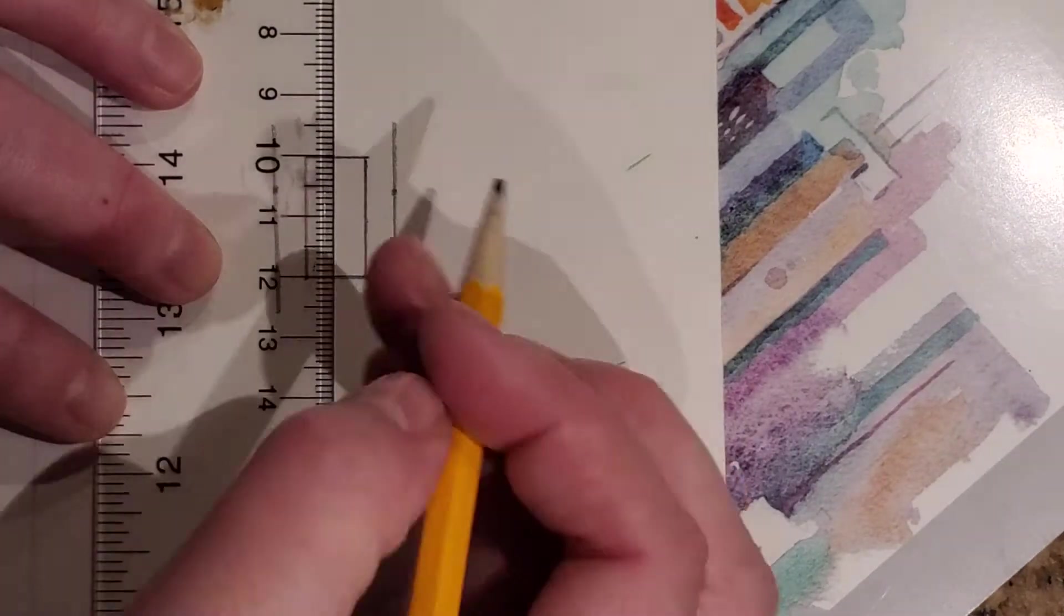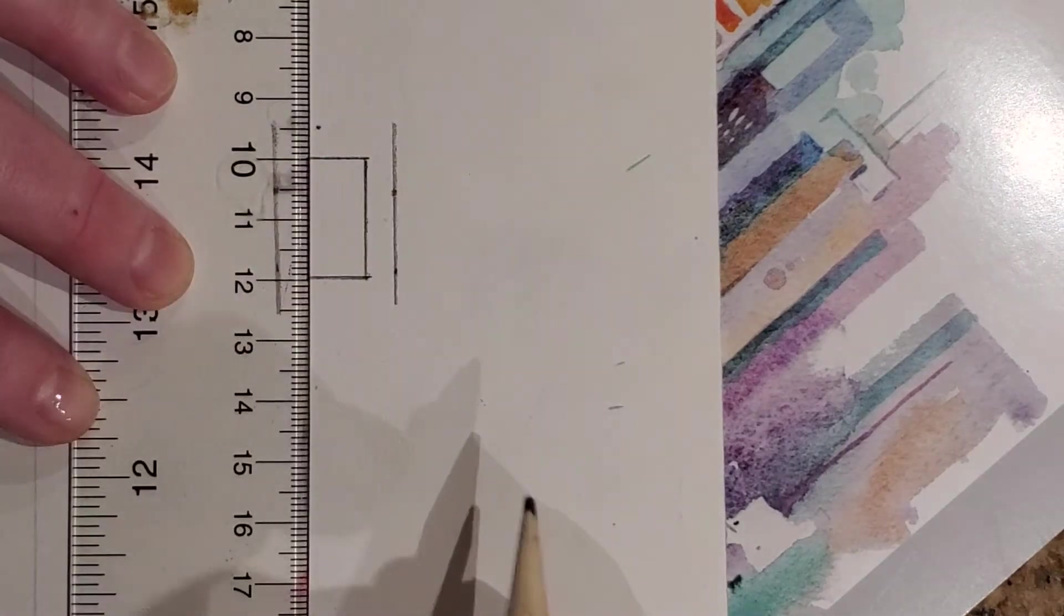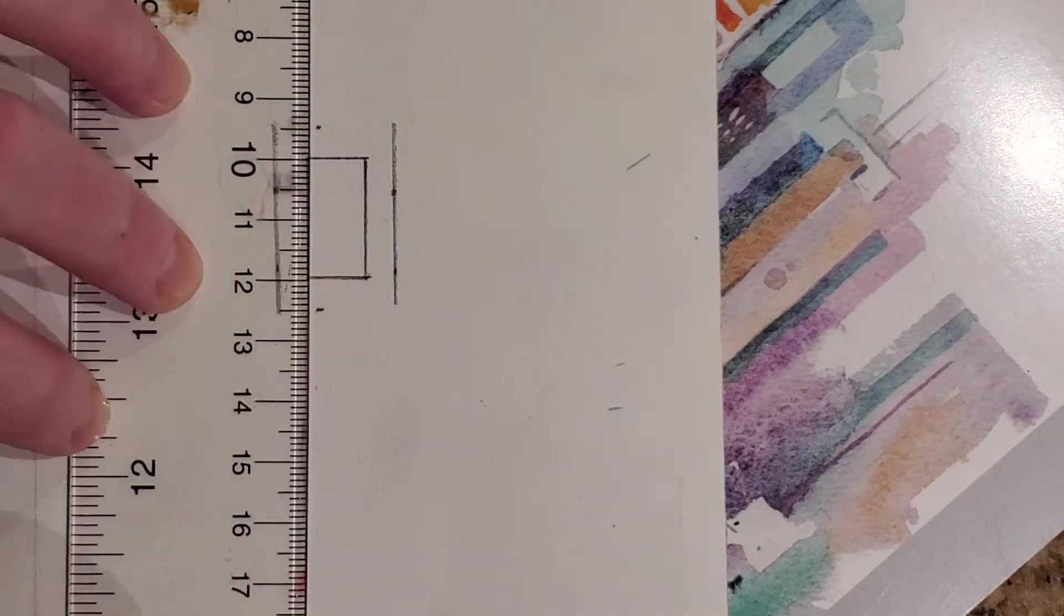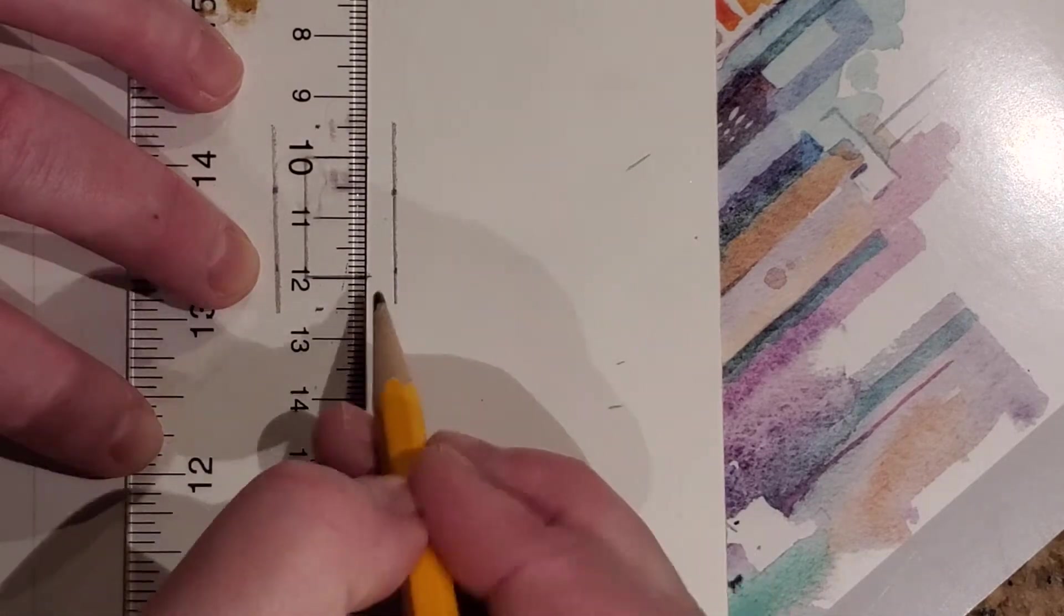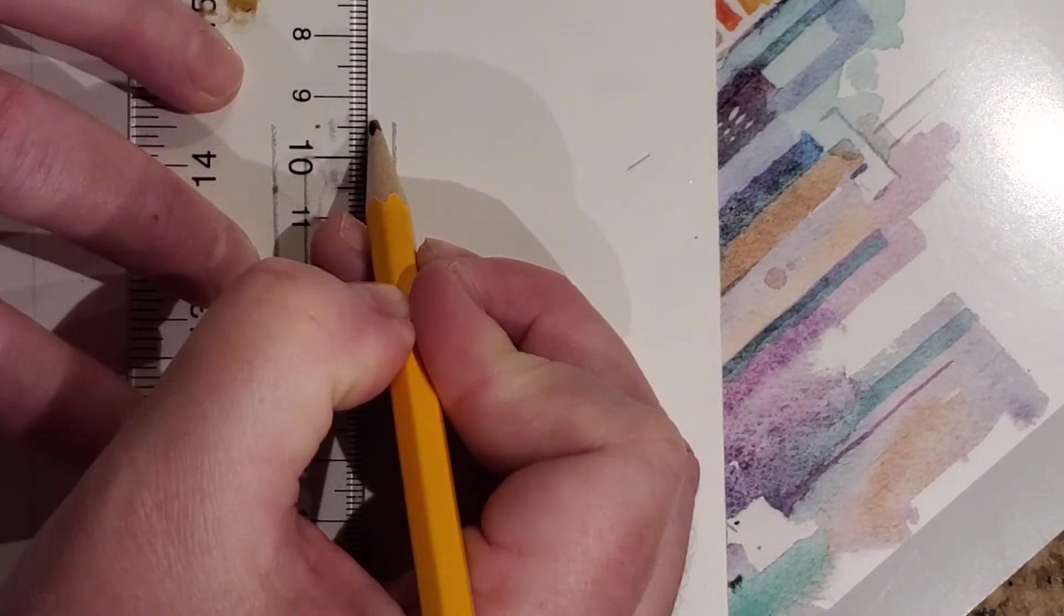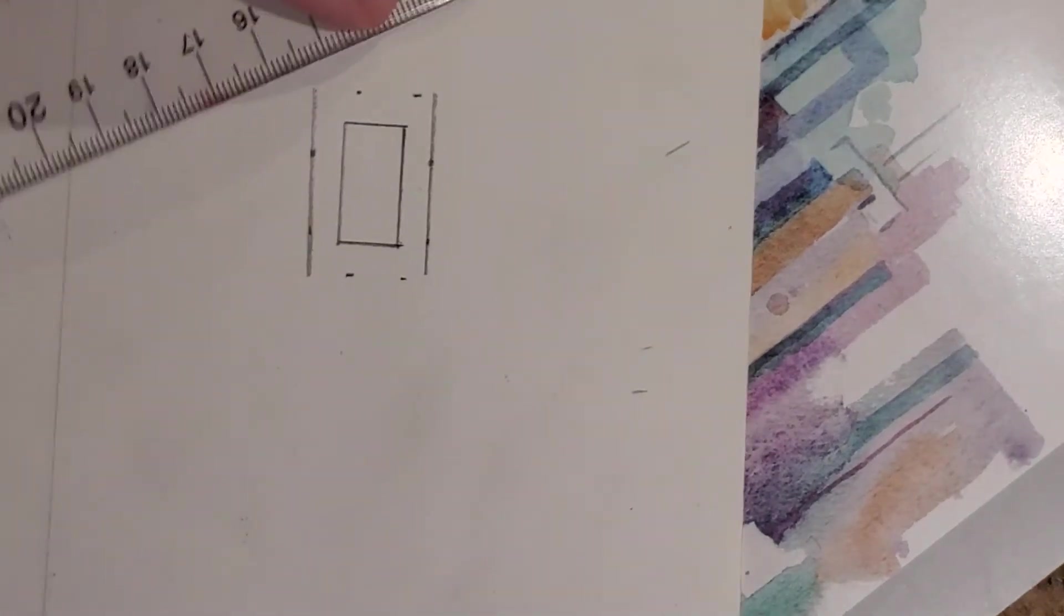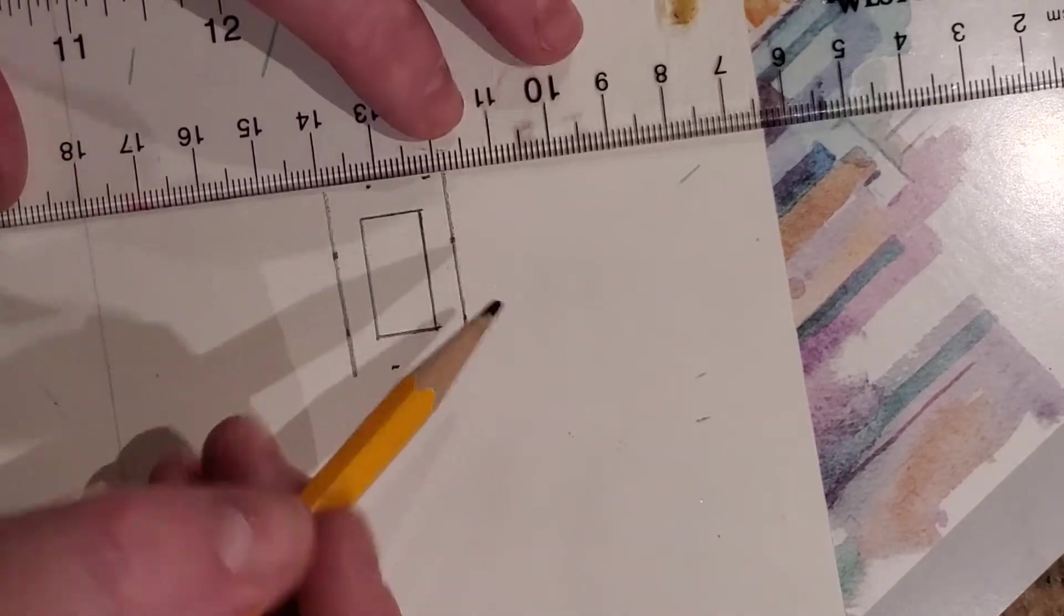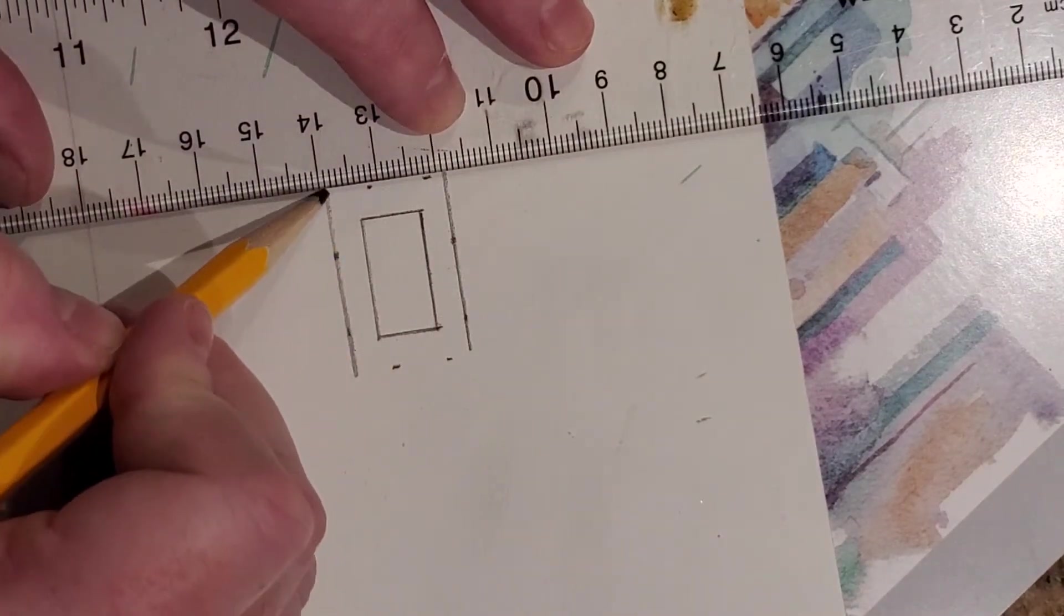Measure half a centimeter out and half a centimeter out, and scoot over and do it again. Measure twice to make it nice. Once I have those two marks, I know that my line is going to be straight.